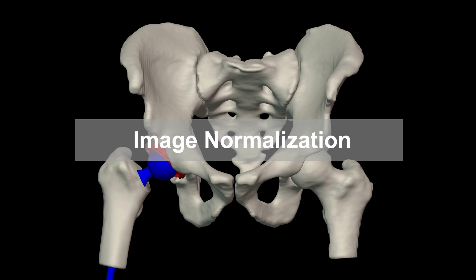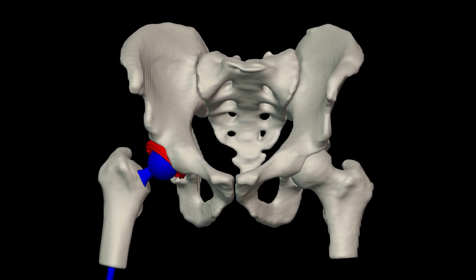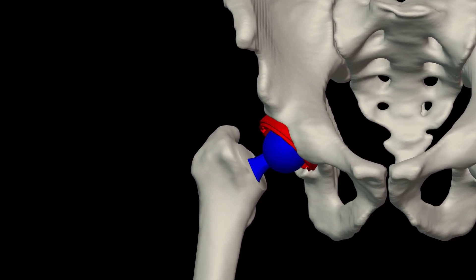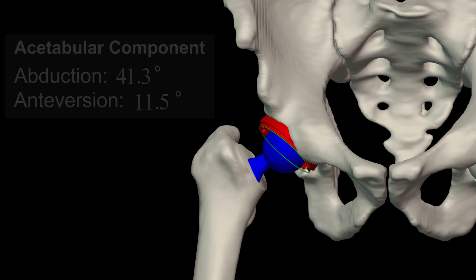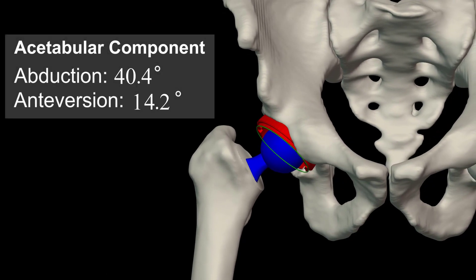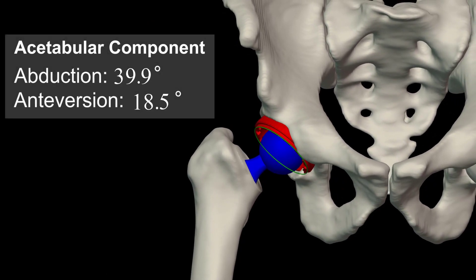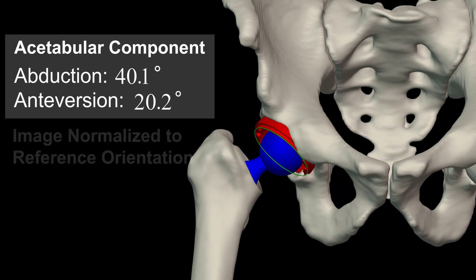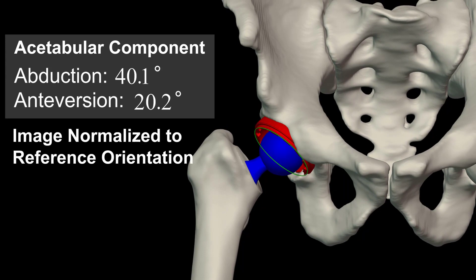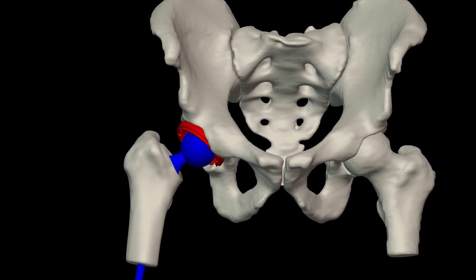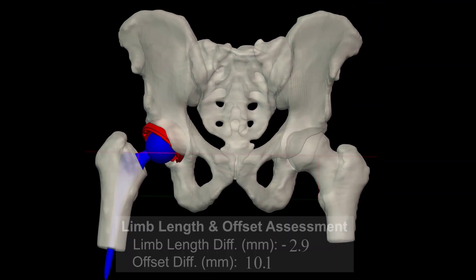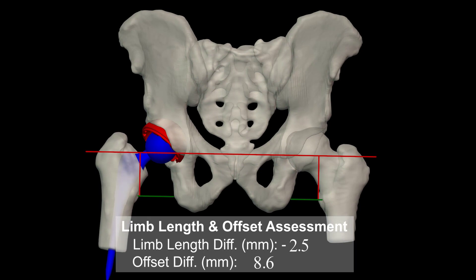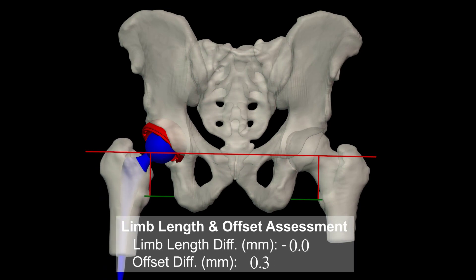Once the acetabular and femur components are implanted, surgeons can visualize component position for reference orientation by normalizing the intraoperative x-ray. RadLINK-323 allows surgeons to increase accuracy by streamlining intraoperative imaging while reducing radiation exposure.